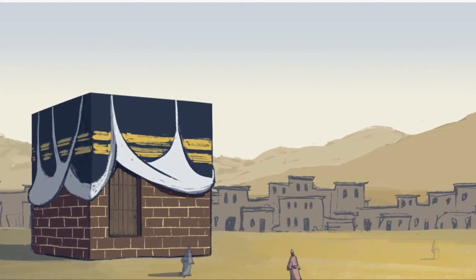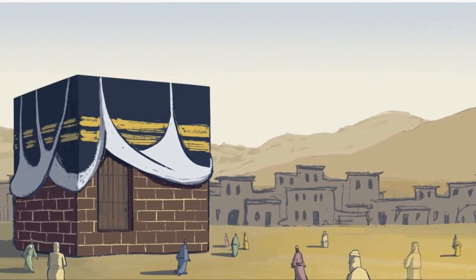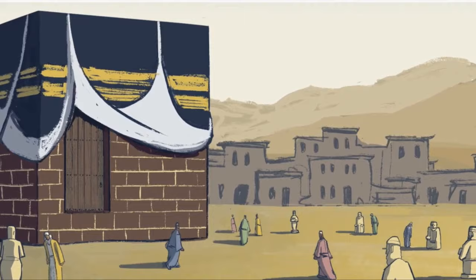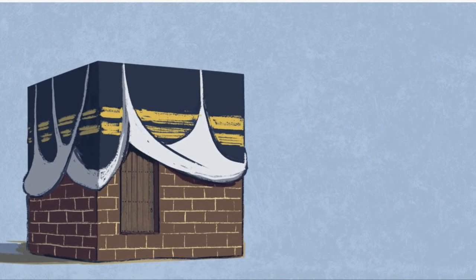Some may have worshipped only this supreme deity, but most simply added him to a pantheon with pagan goddesses depicted as his daughters. Arab custom respected a major shrine to a deity like the Kaaba as a zone of peace.